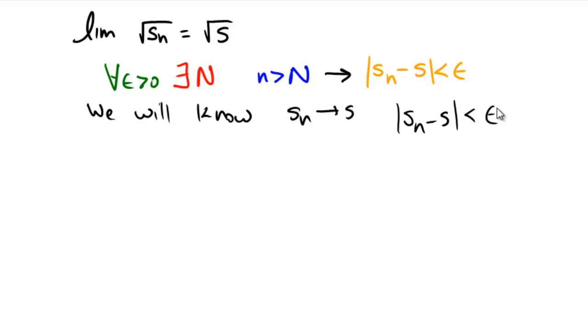Now that's true for any epsilon. So in other words, it's also going to be true for Sn minus S, we can make it less than radical S times epsilon. And that's going to be really important to me because I'll be able to use that in order to bound it down and actually get the limit of the radical one to cancel out and make the whole thing be less than epsilon.